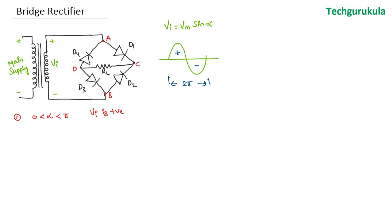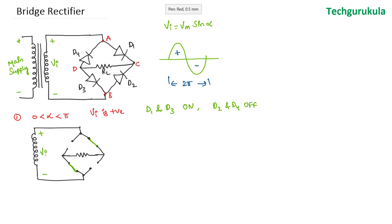Since point A is at higher potential, D1 will be forward biased because the P side is at higher potential compared to the N side. Even D3 will be forward biased because point B is at lower potential compared to D. Hence D1 and D3 will be forward biased and will be ON, whereas D2 and D4 will be OFF because they will be reverse biased. In the circuit diagram, D1 and D3 are short circuited and D2 and D4 are open circuit.